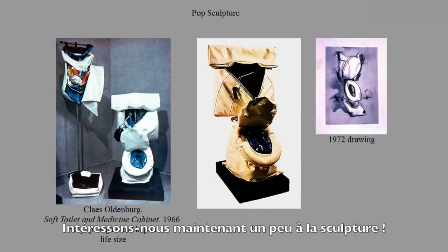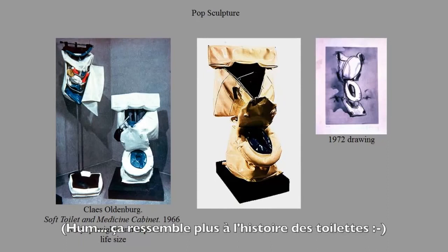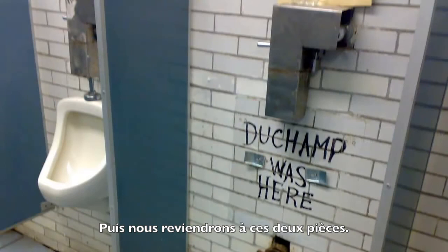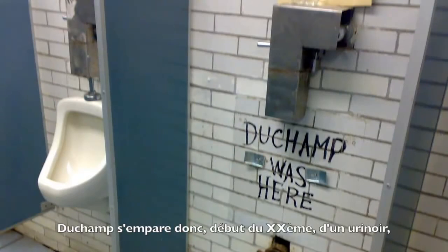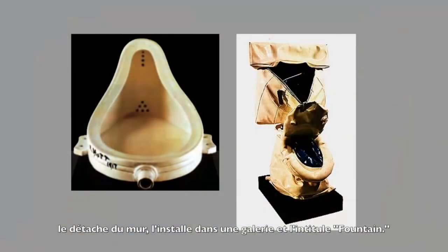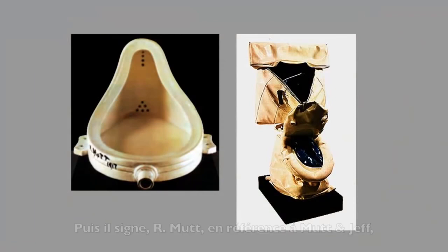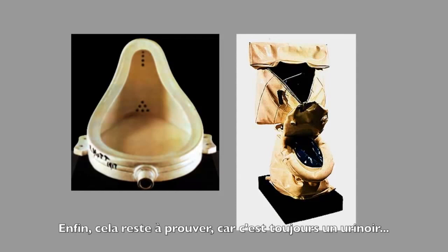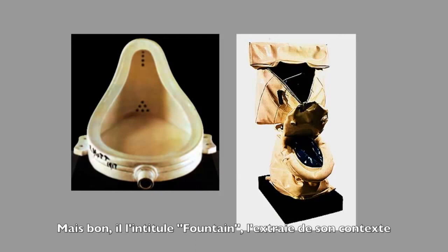Now let's look at some sculpture. Remember Marcel Duchamp took a urinal in the early 1900s, took it off the wall, put it in an art gallery, and called it The Fountain. He added sarcastic statements, signing it 'R. Mutt' — a reference to Mutt and Jeff. He made you see this urinal in a different way. He called it a ready-made, recontextualizing it. That's the history of art history from the 1900s.